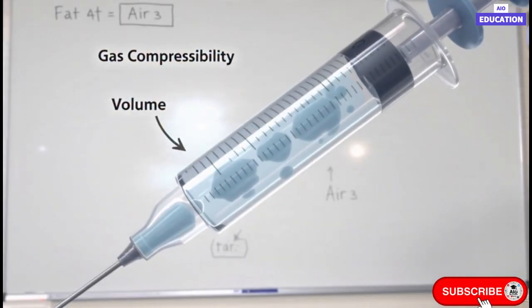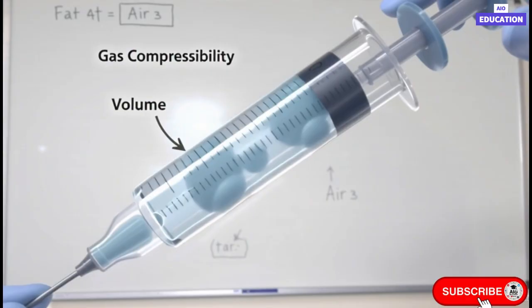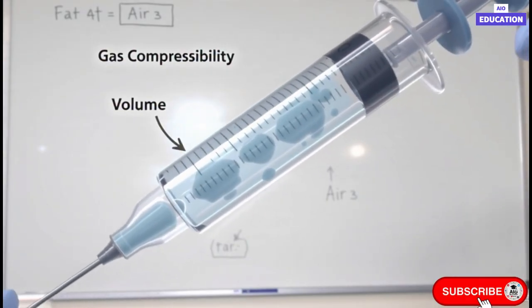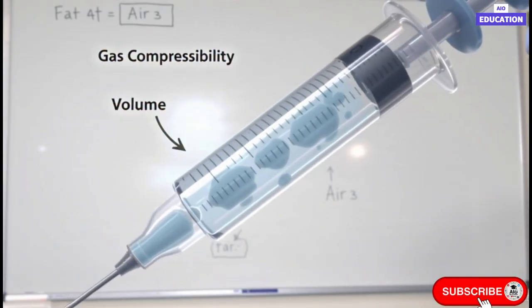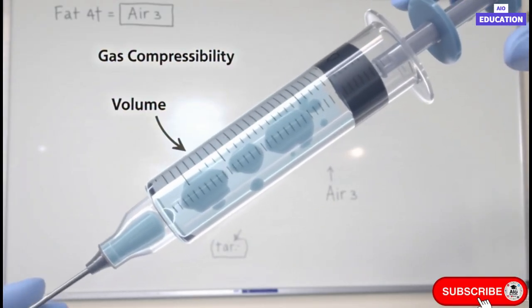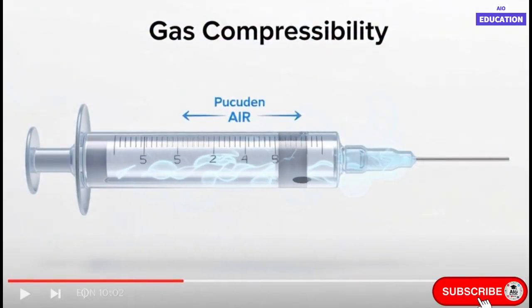But if we try to do the same with water, its volume remains almost the same because liquids are nearly incompressible. Solids are even less compressible because their particles are packed tightly. This shows that gases have the maximum inter-particle spacing, liquids have moderate spacing, and solids have the least spacing.